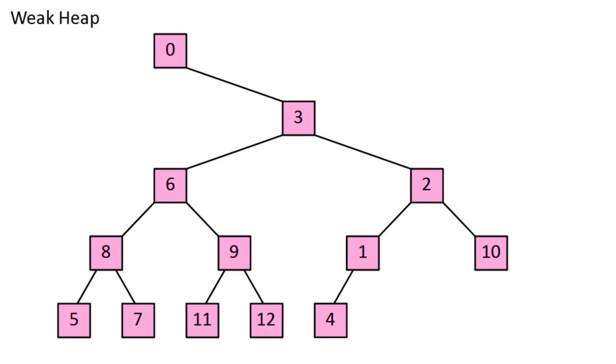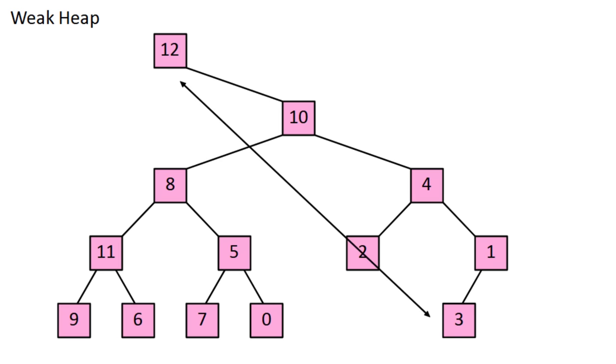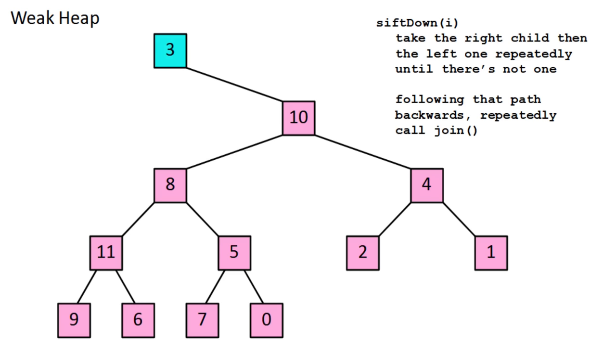Weak heap sort is as simple as building a weak heap, then repeatedly extracting the max. To build a weak heap, given a random list, you go through every piece backwards, and for each one you call the join operation. Now to extract the max, you swap it with the value at the end of the array, which may or may not be the furthest to the right when visualized. Then decrease a variable called length to take it out of commission, and then do something called sift down from the top.